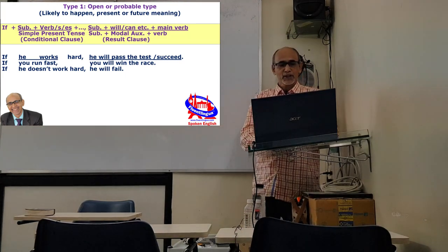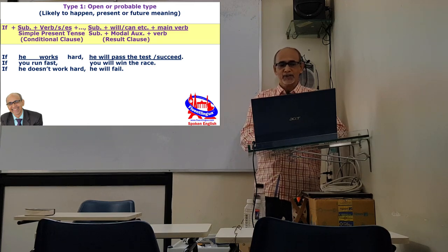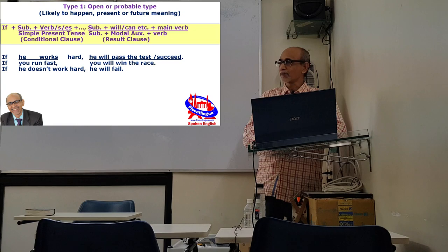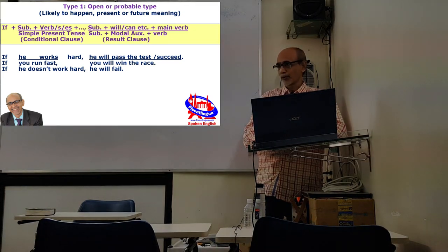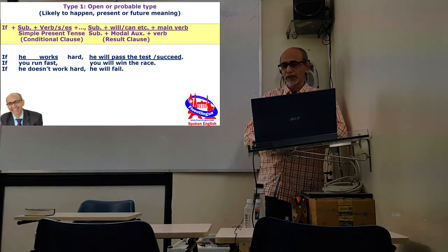If you see the structure: if plus subject plus verb, and because it is the simple present tense we require s or es when the subject is third person singular, and then result part subject plus will or can or may, any modal auxiliary, and then the verb.